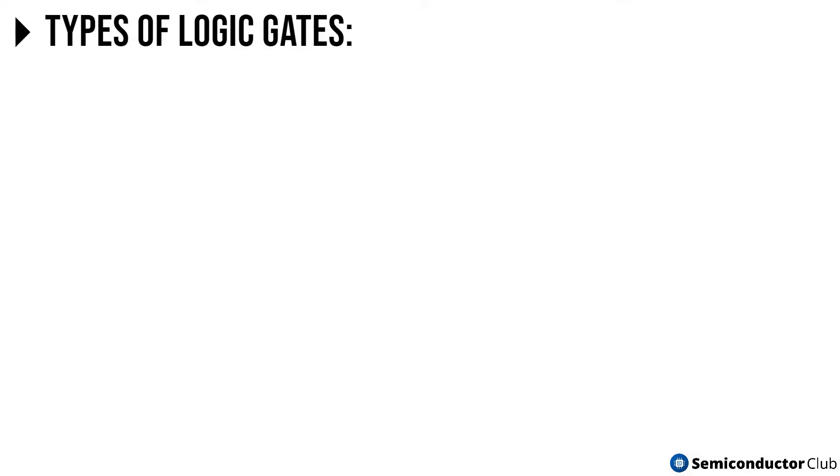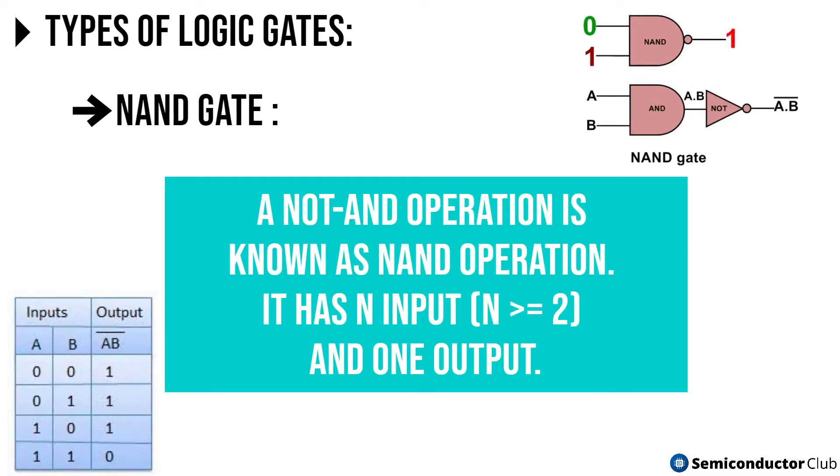Continuing this, we have a NAND gate. A NOT AND operation is known as NAND operation. It has N input, N greater than equals 2, and one output.